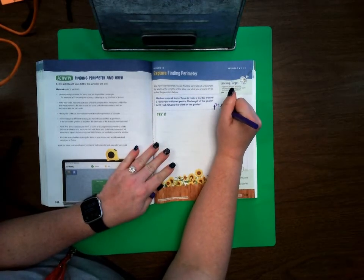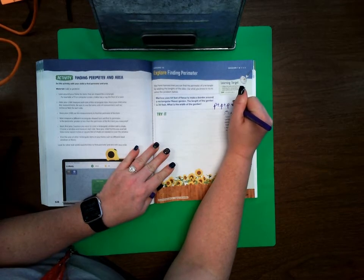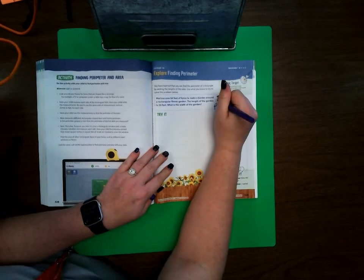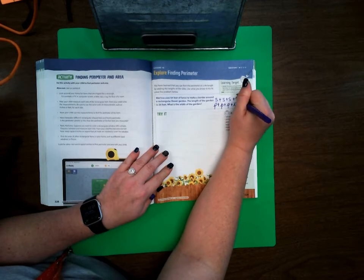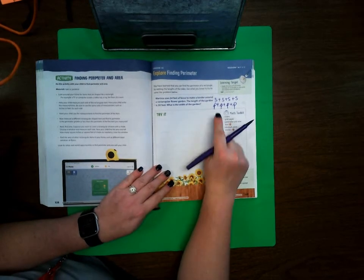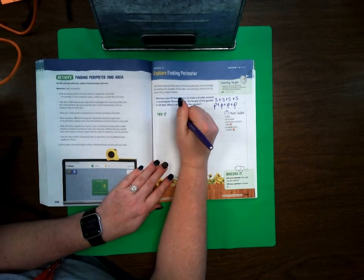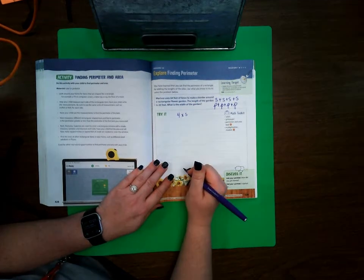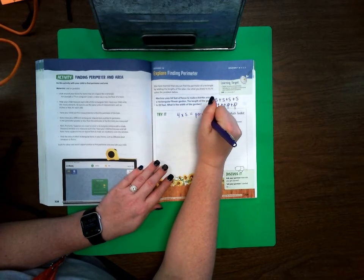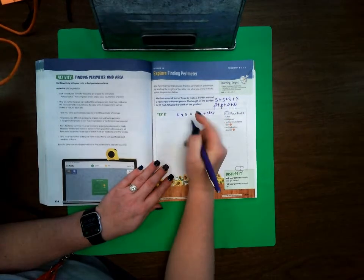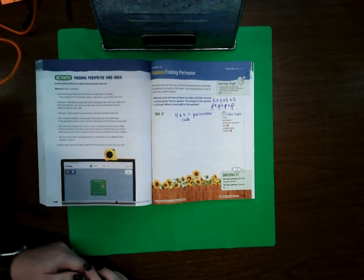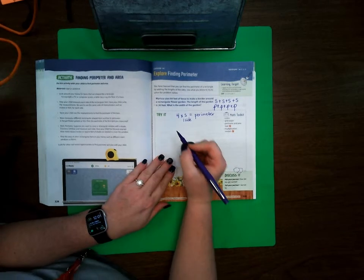The formula for perimeter would be P plus P plus P plus P. I put the P there to represent each side, so you could also even do s plus s plus s plus s. Or in fourth grade, we begin learning about formulas to solve this, so you could do four times s to get your perimeter of your shape. So four times s equals perimeter. Four times one side equals perimeter if it's a square.